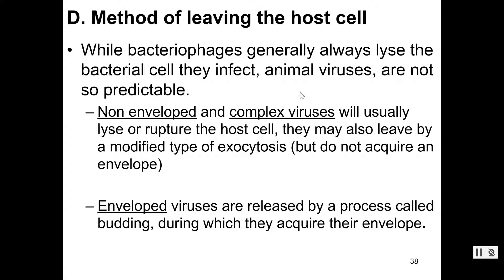Bacteriophage is always lysis, but eukaryotic animal viruses can do it different ways. Sometimes we still get lysis — non-enveloped or naked viruses, and sometimes complex non-enveloped viruses, they usually still lyse a host cell. Sometimes they leave by exocytosis, but that exocytosis doesn't stay with them — they break out of that vesicle once outside the cell and it doesn't leave them with an envelope. If it comes in as a non-enveloped virus, that's what has to go out.